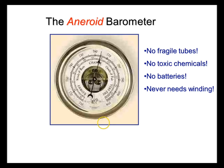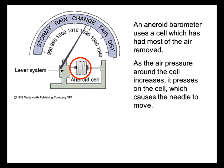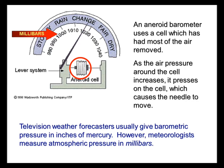Then came the aneroid barometer. We don't have any fragile tubes, we don't have any toxic chemicals, we don't need batteries, and we don't need to wind it. In an aneroid barometer, it uses a cell which has had most of the air removed. As the air pressure around the cell increases, it presses on the cell, which causes the needle to move.